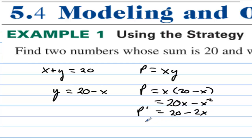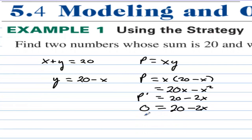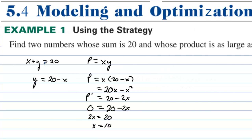To find minimums and maximums we always set the derivative equal to zero. We can add 2x over and then divide by 2. So x equals 10. And if the two numbers add up to 20, then the two numbers are 10 and 10.